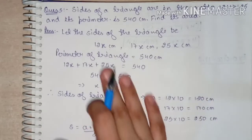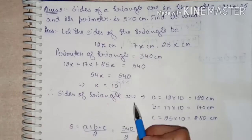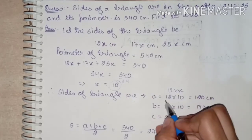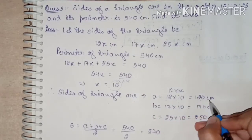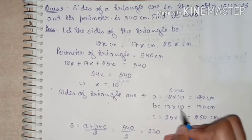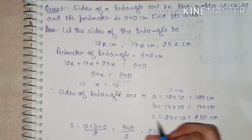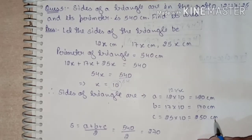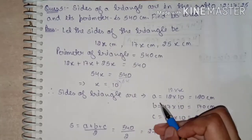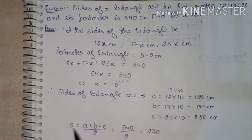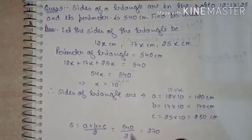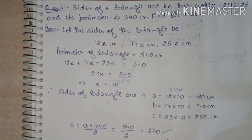Now we can find all three sides. a = 12 × 10 = 120 cm, b = 17 × 10 = 170 cm, c = 25 × 10 = 250 cm. Now for the semi-perimeter: s = (a + b + c) / 2 = 540 / 2 = 270 cm.